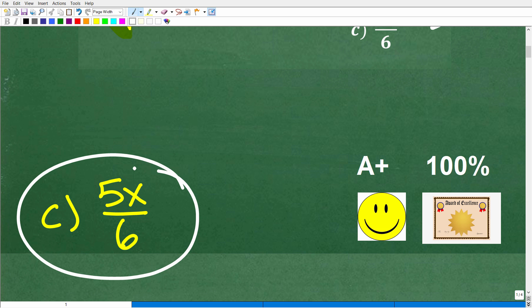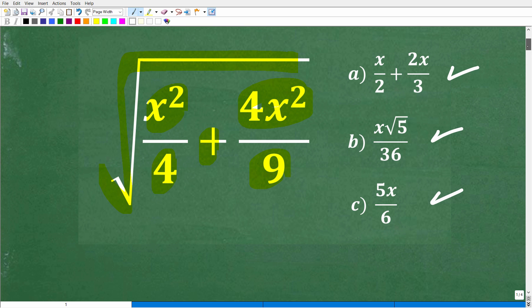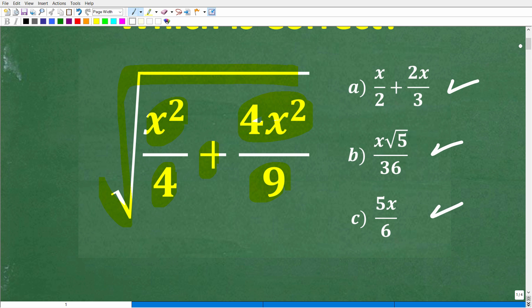If you got this right, you get a happy face, an A plus, 100%, and a Certificate of Excellence for your knowledge of working with square roots. Now this particular problem, a lot of students are going to make a mistake because they're going to confuse this addition situation with a multiplication situation. You'll see what I'm talking about.